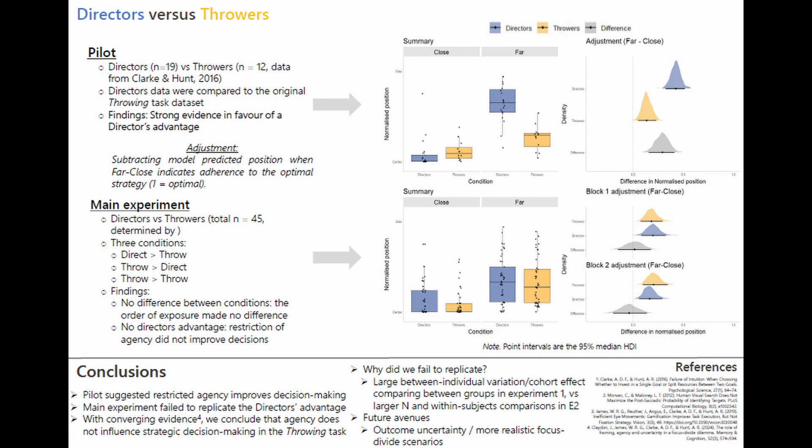In future research, we're investigating the role of outcome uncertainty, which is another candidate explanation for poor focus divide decision making, and setting the focus divide dilemma in more realistic scenarios, such as prioritizing revision for an exam, to see if these decision making failures extend beyond the lab.